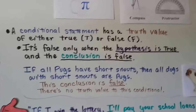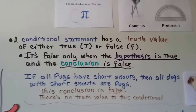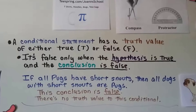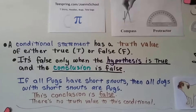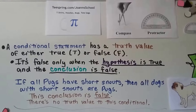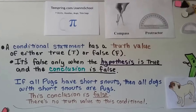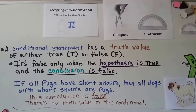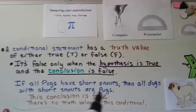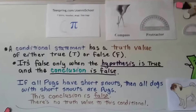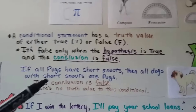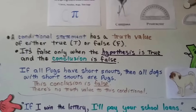A conditional statement has a truth value of either true (T) or false (F), and it's false only when the hypothesis is true and the conclusion is false. Take a look at this conditional statement: if all pugs have short snouts, then all dogs with short snouts are pugs. Well, that conclusion is false. Just because it's got a short snout doesn't mean it's a pug. We do know pugs have short snouts, but not all dogs with short snouts are pugs — there are a lot of other breeds that have short snouts.